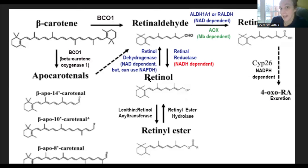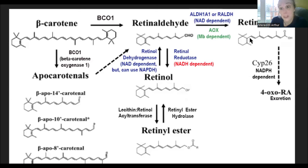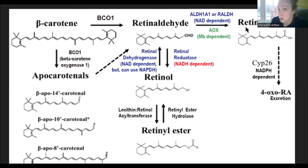Kinetically speaking, the body doesn't really like to make retinol from beta carotene — it prefers to move retinol aldehyde forward to retinoic acid. You also cannot take retinoic acid and make retinol aldehyde and retinol; it's an irreversible reaction. Once you get to retinoic acid, you can't go back to retinol. The only way it can go is excretion — we can excrete it through our bile acid.